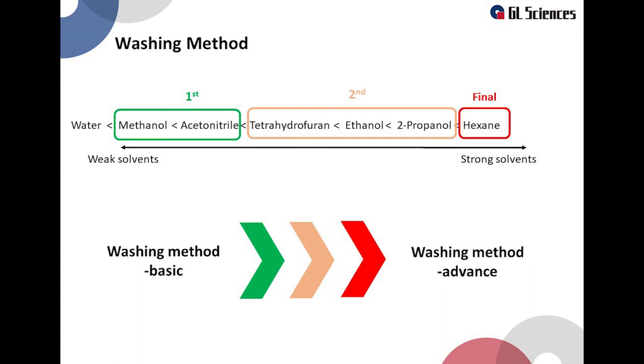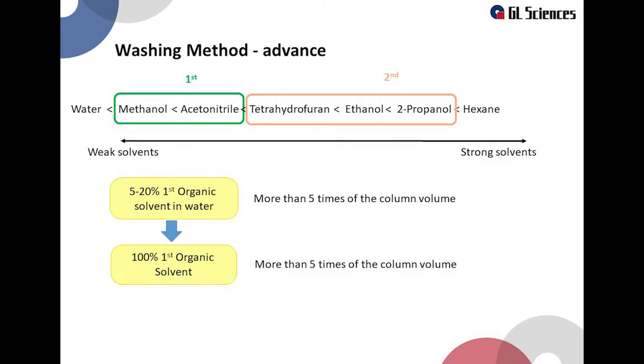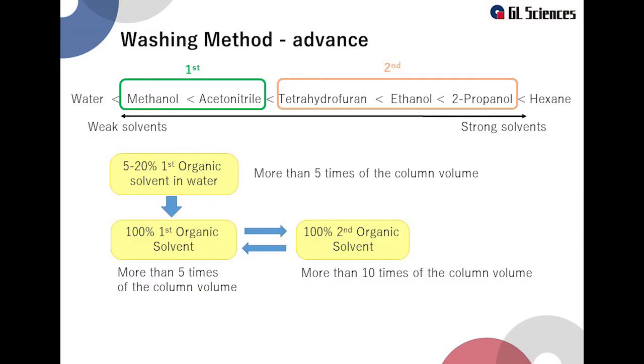If the basic cleaning methods introduced so far do not improve the chromatography, try an advanced washing method using organic solvents of the second choice or final choice. First wash with an organic solvent containing water to prevent salt precipitation. This is similar to the previous method. Fill the column with 100% organic solvent of the first choice and run 5 times the column volume. Then fill it with 100% organic solvent of the second choice and run 10 times the column volume.